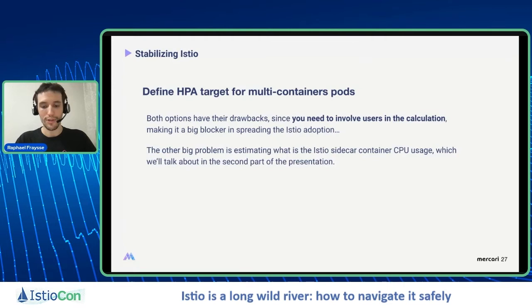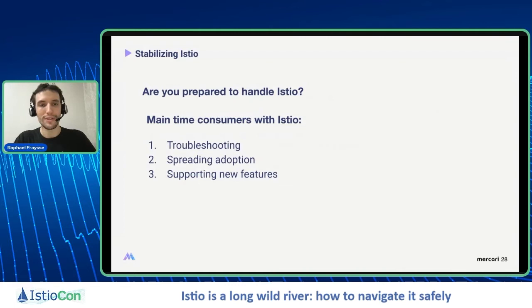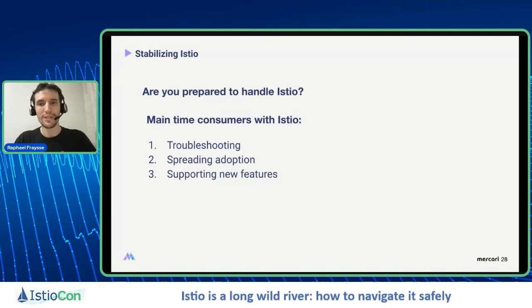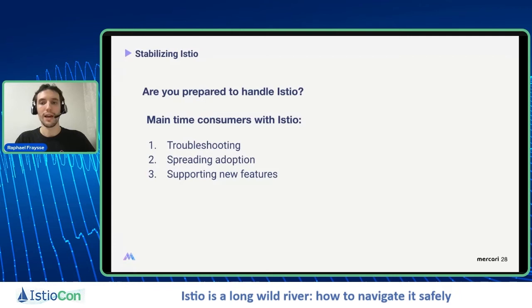Now we get to the question we wanted to ask ourselves when we started Istio one and a half years ago: are we prepared to handle it? To answer this, we need to identify the main time consumers with Istio. The biggest is troubleshooting — you have so many things to check when you've added proxies everywhere, and this increases with the number of features you're using. The second biggest is spreading adoption: evangelizing, sharing knowledge, convincing the business, convincing your users. The human interaction takes a lot of time. And the last thing is supporting new features — learning, mastering, abstracting all take time, especially the abstraction.